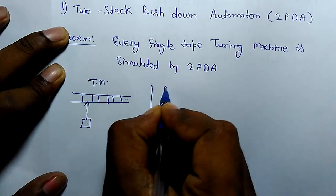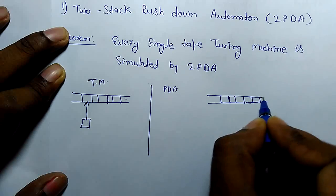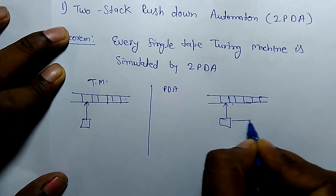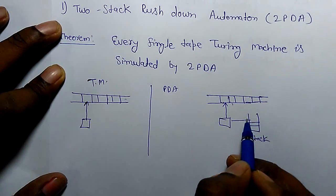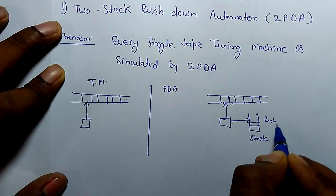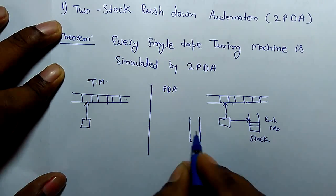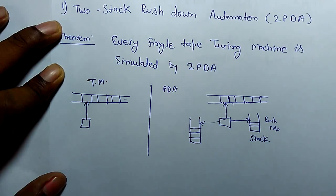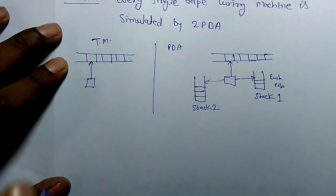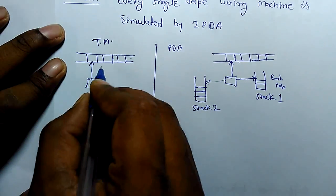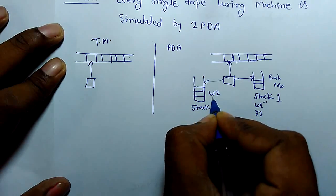In the pushdown automaton, there is an input symbol and one stack. It reads from input and performs push and pop operations on the stack. Now we are going to take one extra stack and show the equivalence to the Turing machine. The Turing machine performs read and write operations, so we assume stack 1 handles write-1 and read-1, and stack 2 handles write-2 and read-2 operations.